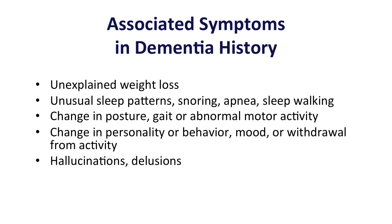There are additional symptoms that may be associated in taking a dementia history and may provide clues for different etiologies. Items such as change in appetite and weight should be assessed, as well as unusual sleep patterns, change in posture or gait or the occurrence of falls, changes in personality, mood, and behavior, and psychosis such as hallucinations and delusions.